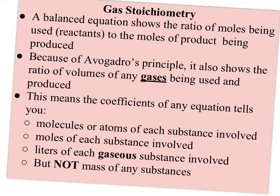Let's review a little bit about a balanced equation. A balanced equation shows the ratio of moles being used — your reactants — to the moles of product being produced. And because of Avogadro's principle, you can also think of these coefficients as showing you the ratio of volumes for any gases being used. The ratio is going to work out the same. So your coefficients really tell you three things simultaneously.